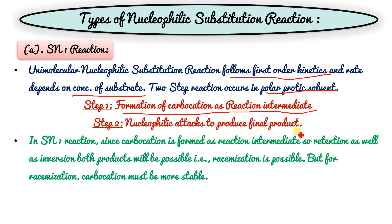The rate will be determined by the RDS — the rate determining step — that is, the slowest step. In SN1, since carbocation is formed as a reaction intermediate, both retention and inversion products are possible.